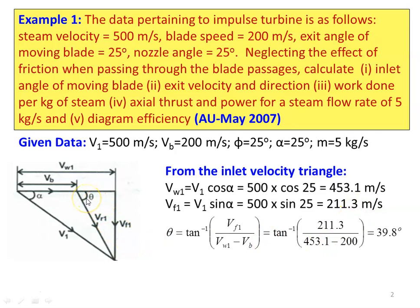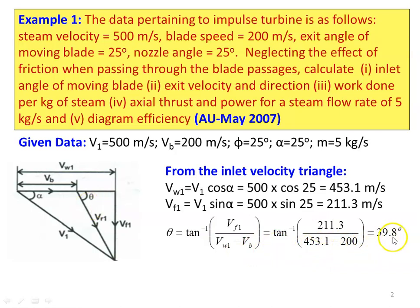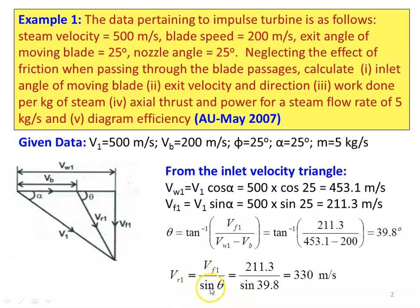From the velocity triangle, VW1 equals V1 cos alpha, which is 500 into cos 25, equal to 453.1 meters per second. VF1 equals V1 sin alpha, which is 500 into sin 25, equal to 211.3 meters per second. Then calculate theta: tan theta equals VF1 divided by VW1 minus VB, which gives theta equal to 39.8 degrees.